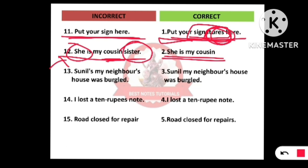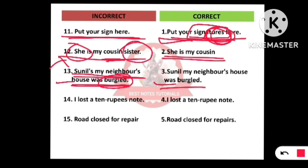Number thirteen: 'Sunil's my neighbor's house was burgled.' 'Burgled' means to have a robbery — when a thief steals from somebody's house. The sentence should be structured as: 'Sunil my neighbor's house was burgled' — remove the apostrophe-s from 'Sunil's.'